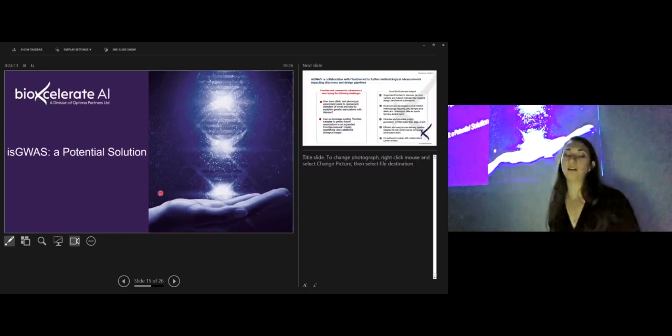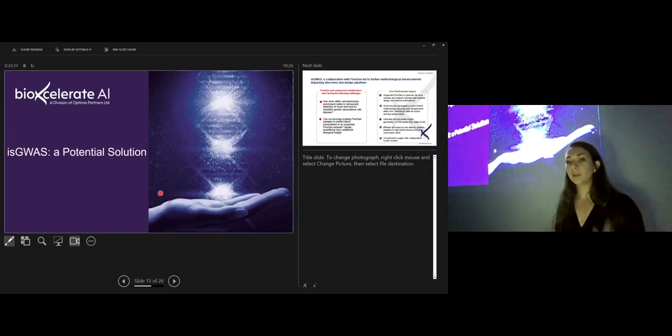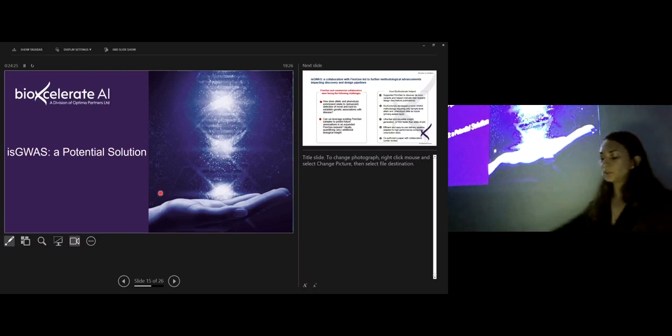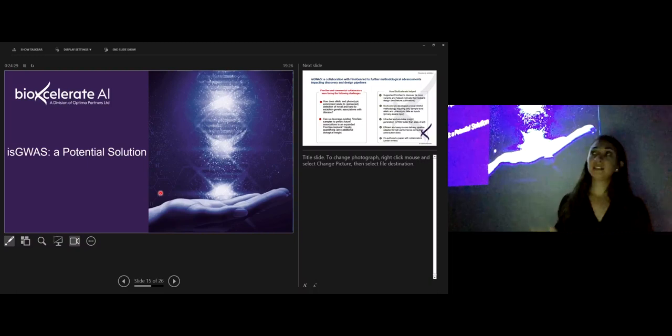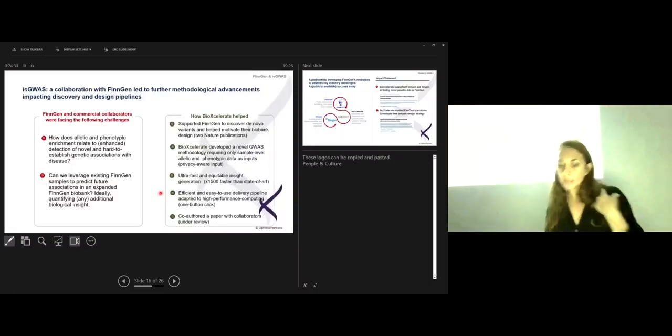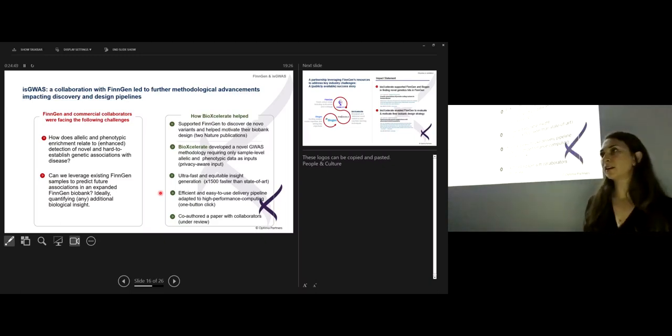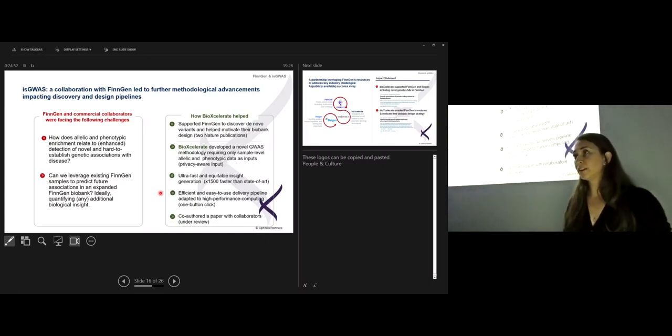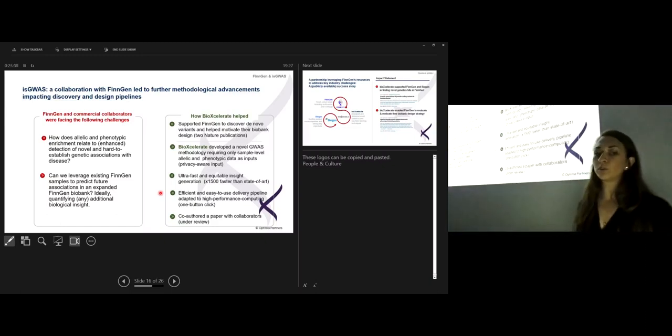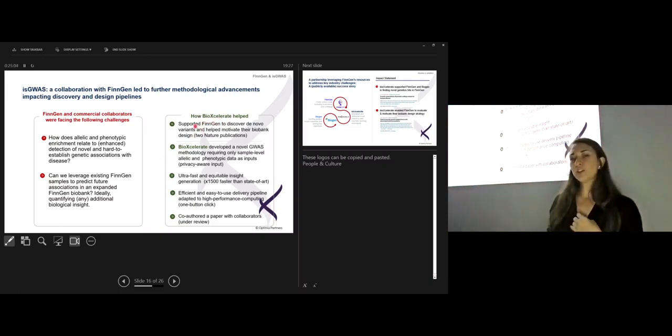So, going past that, Optima and BioAccelerate co-developed eGWAS. It's a GWAS solution, like a GWAS method, and we believe that it is a potential solution to some of these challenges. I don't say this is the right tool, but I think it's a tool that is thinking in the right direction. eGWAS was developed in a collaboration with FinGen and some other commercial collaborators. And the main ask from FinGen was like, we have this data cohort of 100,000 people that we have enriched from an allelic and phenotypic point of view. Our reviewers are asking, was it done correctly or not? Because right now, we want to pay to genotype another 200,000 people. So now is the time to know whether our enrichment was correct or not. This is how actually BioAccelerate helped. We essentially supported FinGen to evaluate and motivate their biobank design.